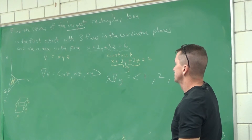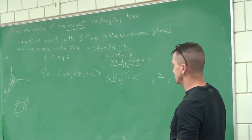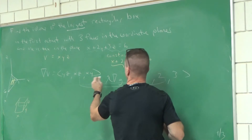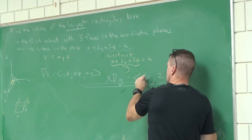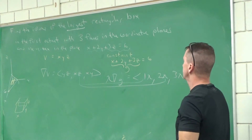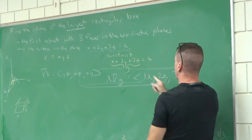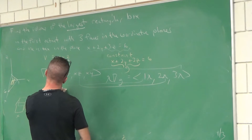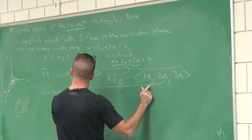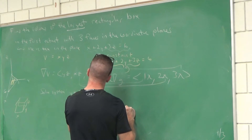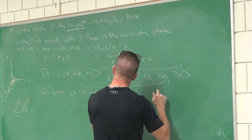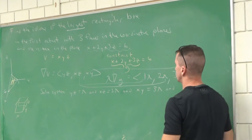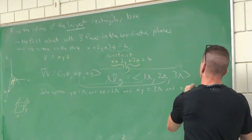Pretty simple — not every time, I mean, there are some nasty systems. We have technology that can solve crazy systems as well. This must equal this, this must equal this. I'm going to put my lambda in and distribute it: one lambda, two lambda, and three lambda. XY must equal three lambda. So here's the system: YZ must equal lambda, XZ must equal two lambda, XY must equal three lambda, and X plus 2Y plus 3Z equals six.